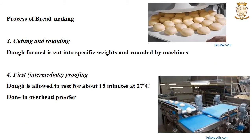The next step in bread making is cutting and rounding. The dough formed is cut into specific weights and is rounded by using machines. In the fourth stage, the first or intermediate proofing, the dough is allowed to rest for about 15 minutes at about 27 degrees Celsius. This is done in equipment known as an overhead proofer.